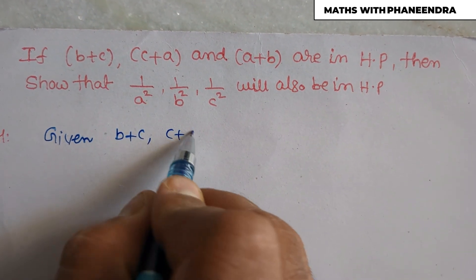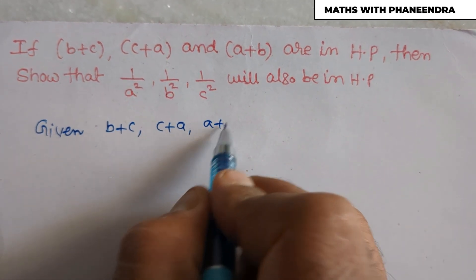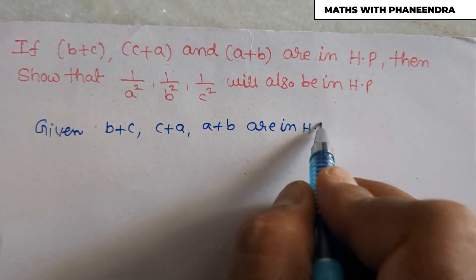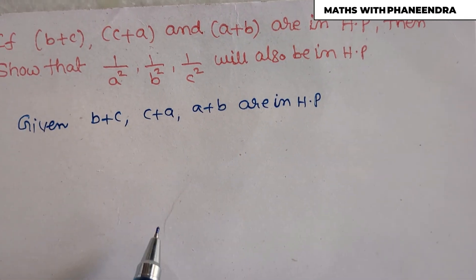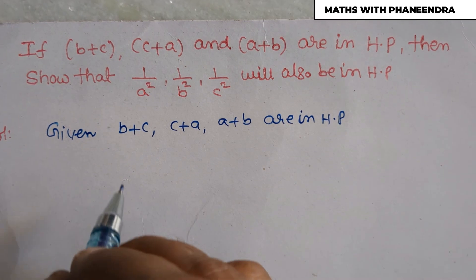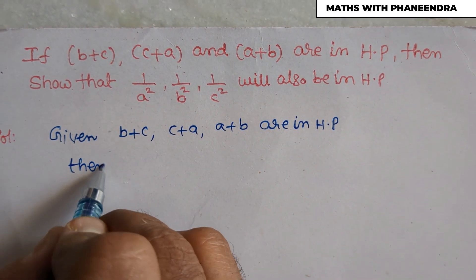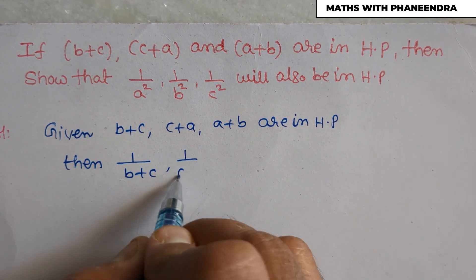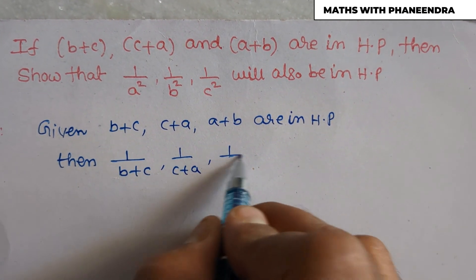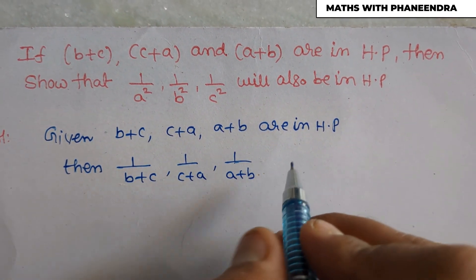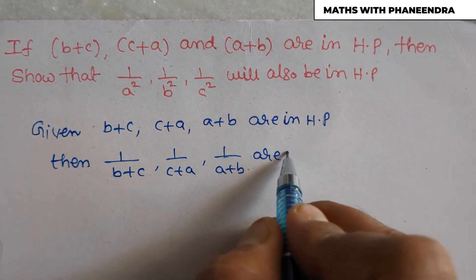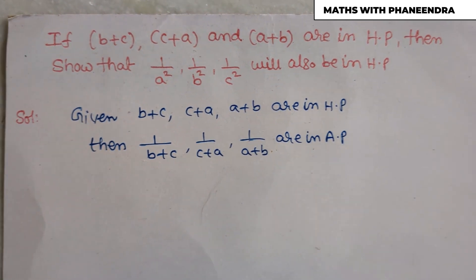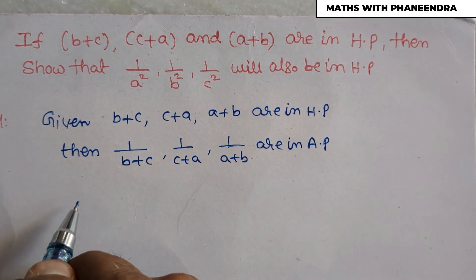We know that the reciprocals of a harmonic progression will be in arithmetic progression. Therefore, 1/(b+c), 1/(c+a), 1/(a+b) are in arithmetic progression. Whenever a, b, c are in arithmetic progression, the common difference condition must hold.